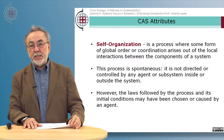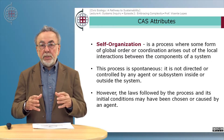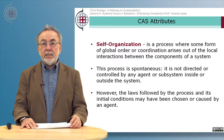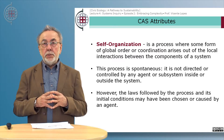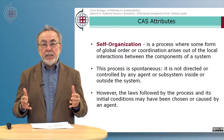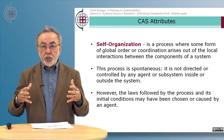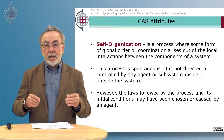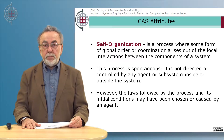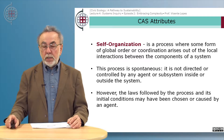Another important attribute of complex adaptive systems is self-organization — a process where some form of global order or coordination arises out of the local interaction between the components of a system. This process is spontaneous; it is not directed or controlled by any agent or subsystem inside or outside the system. According to systems philosophy, the entire universe is a self-organized and complex structure, meaning that all its characteristics, growth, and evolution are not necessarily controlled by one agent or entity.